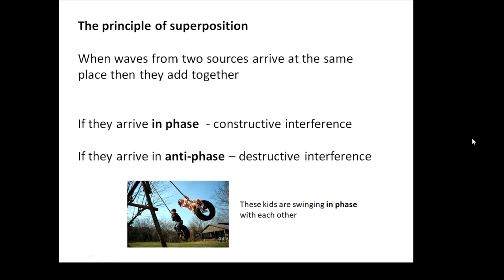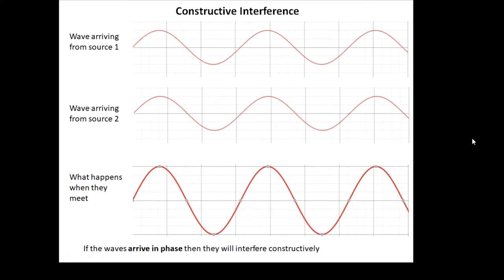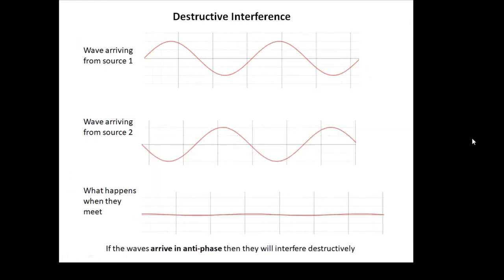If the two waves arrive in phase, we get constructive interference and end up with a big wave. Look at these two diagrams: waves arriving from source one and waves arriving from source two — they are in phase, going up and down together at the same time. The result is a big wave, so the observer would hear a loud sound.